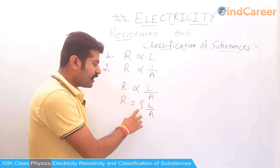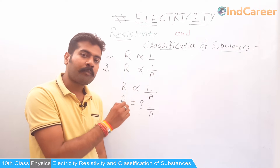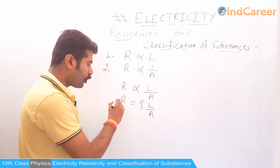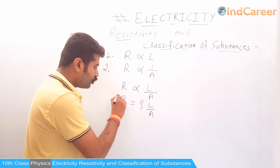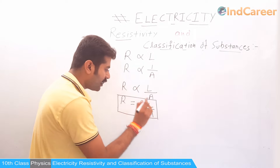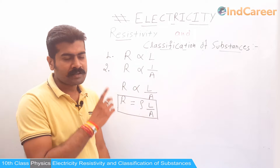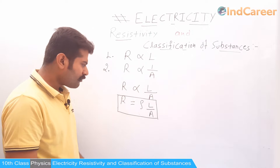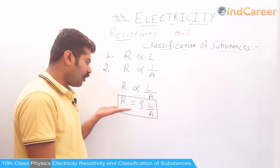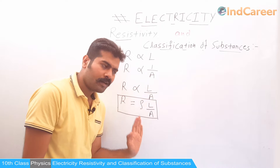This Rho is called resistivity. It is a property of the material. It is very important to keep this formula in mind because we are going to use it in numericals on resistivity as well. The formula for resistivity is: R equals Rho into L upon A.